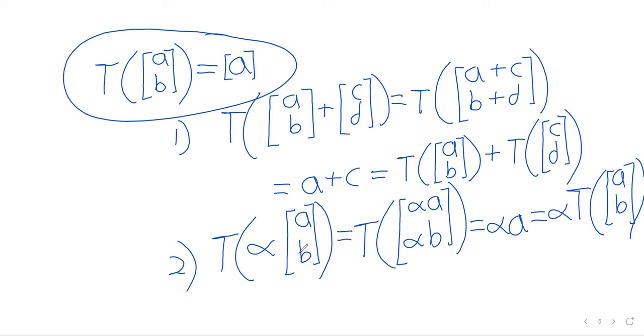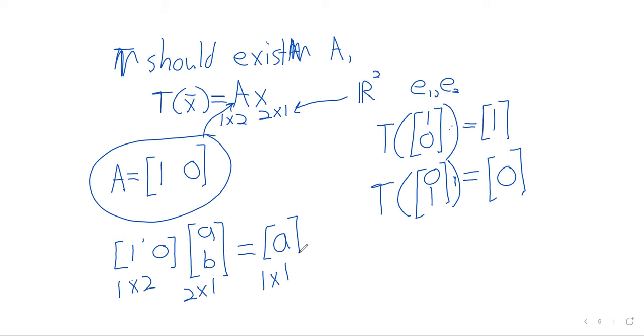So our claim is that multiplying by A gives us this linear transformation. Well, let's see. If we multiply a vector by this matrix, capital A, we get a one-by-one matrix in return. This is one-by-two. This is two-by-one. Multiply them and we do get a one-by-one vector. And it's one times A, zero times B. This is indeed A. So multiplying by this matrix does do what this linear transformation is supposed to do. So we can think of any linear transformation as matrix vector multiplication.